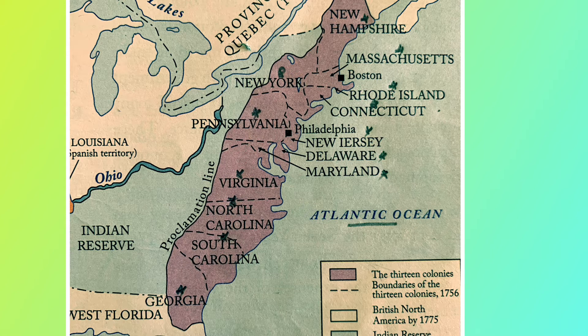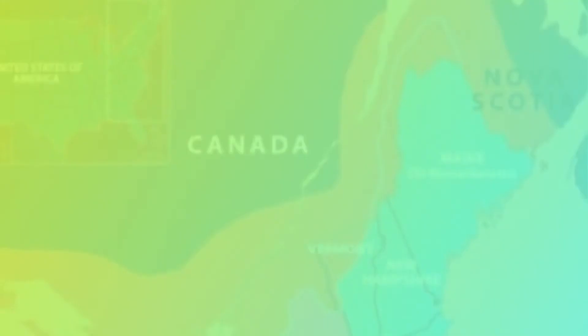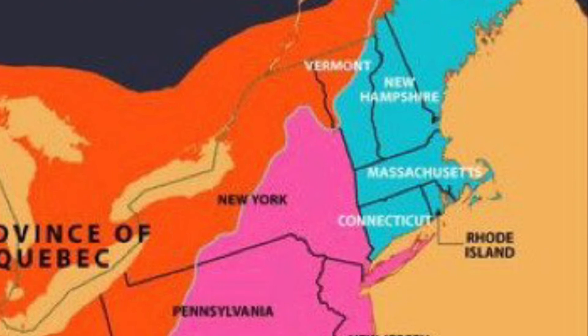The 13 colonies were: New Hampshire, Massachusetts, Rhode Island, Connecticut, New York, New Jersey, Pennsylvania, Delaware, Maryland, Virginia, North Carolina, South Carolina, and Georgia.